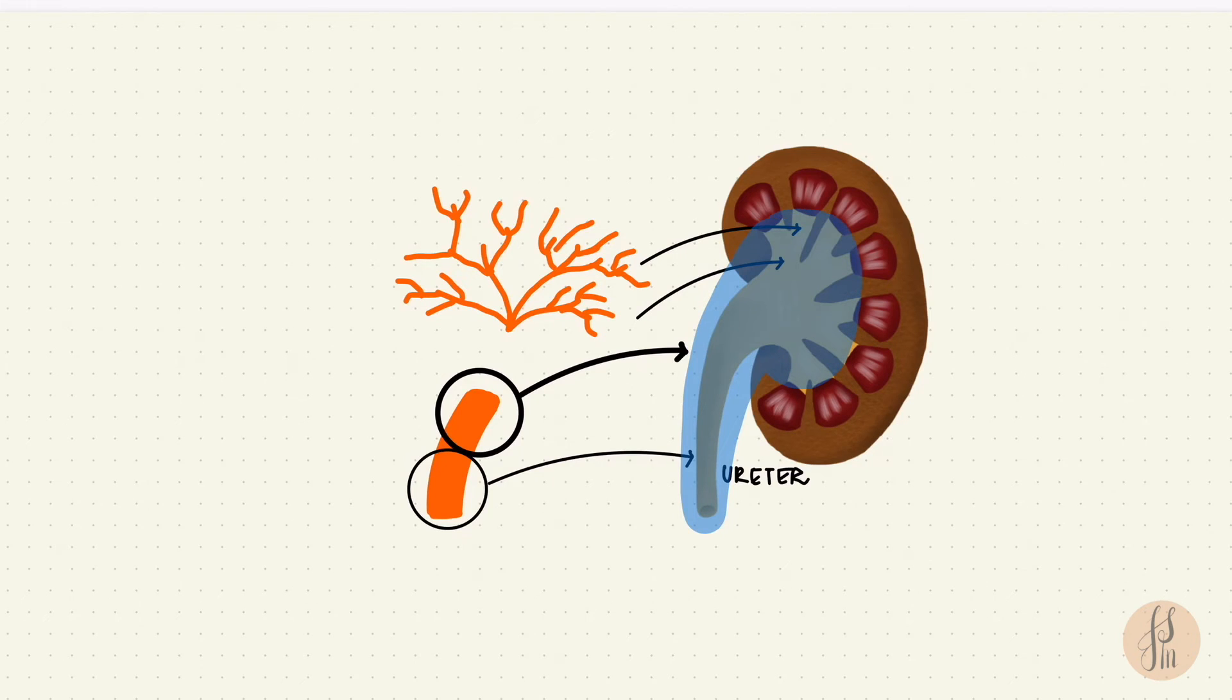Now on top of each of these collecting tubules, the metanephric mesenchyme forms a cap. This is going to form the excretory portion of the kidney. The ureteric bud induces differentiation of this cap. There's formation of a renal or a metanephric vesicle. So these vesicles, they become S-shaped. And one portion of this S gets associated with capillaries. So that's going to form the glomerulus.